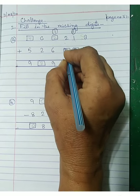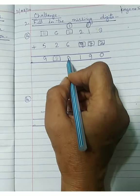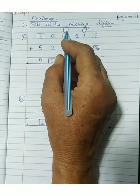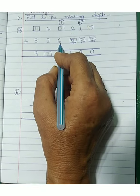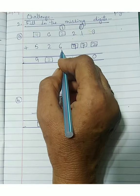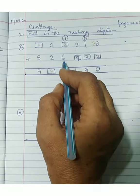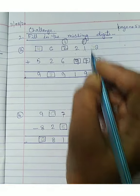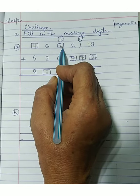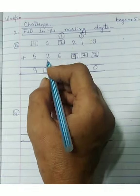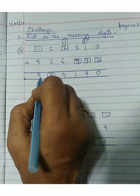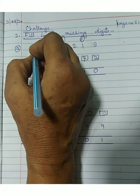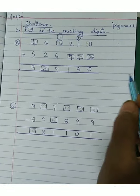11 में से हमने 2 minus किया है तो यहां पर आपका आएगा 9। अब next, answer में दिया हुआ है number 9, carry 1 है, 1 plus 6 हो गया 7। तो 9 में से 7 minus करना है — answer आया 2। Fill in the blanks में 2 लिखेंगे। इसमें simple दिया हुआ है: 9, 6 plus 2 = 8, और answer 9 में से 5 minus करेंगे तो आ जाएगा 4। Is it clear to everyone?